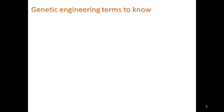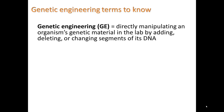Here are some terms to know. Genetic engineering, or GE, means directly manipulating an organism's genetic material in the lab by adding, deleting, or changing segments of its DNA. This is something different from what happens during reproduction or traditional crossbreeding.